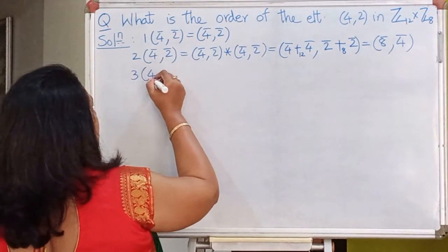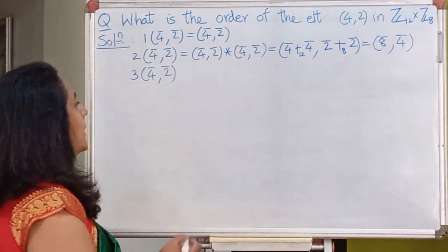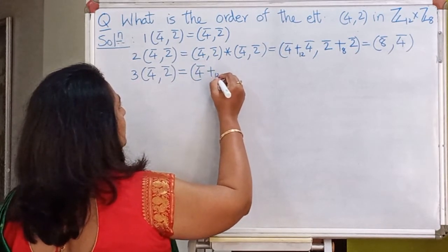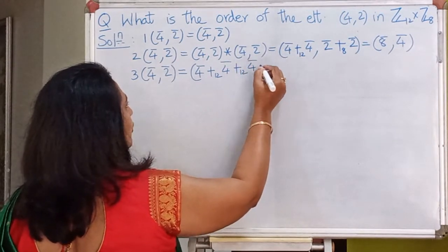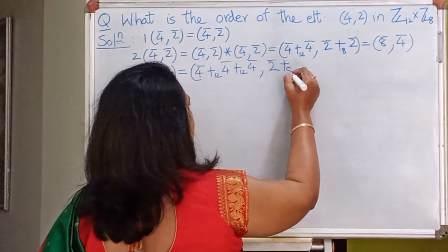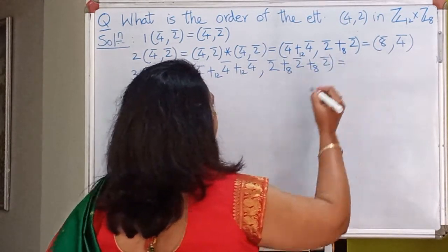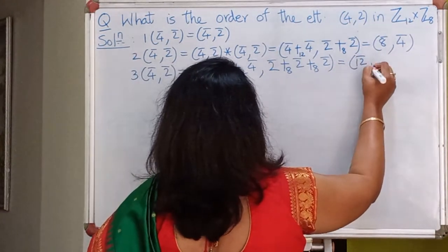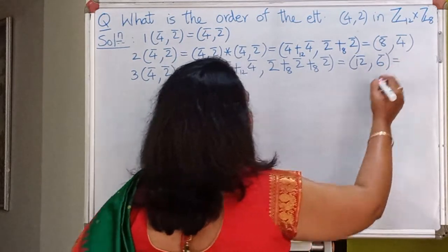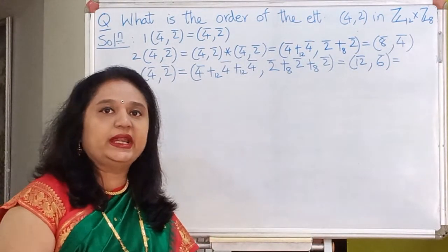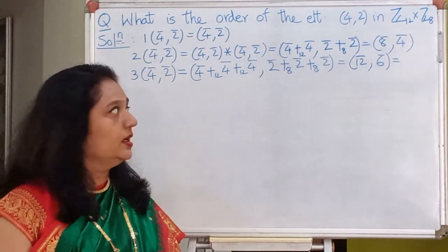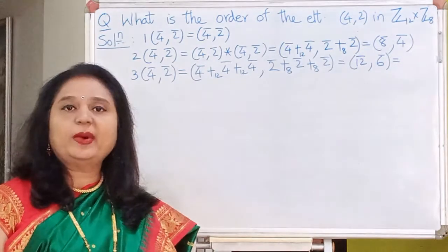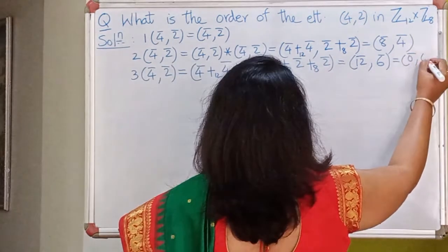Let us now find 3×(4̄,2̄). That is 4̄+4̄+4̄ under addition modulo 12, and 2̄+2̄+2̄ under addition modulo 8. This gives 12̄ and 6̄. But the first element comes from Z12, and in Z12, 12̄ is the same as 0̄. So 3×(4̄,2̄) = (0̄,6̄).